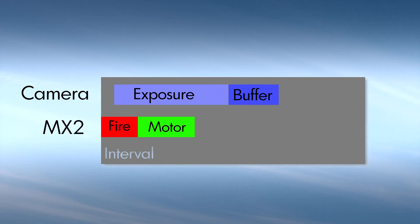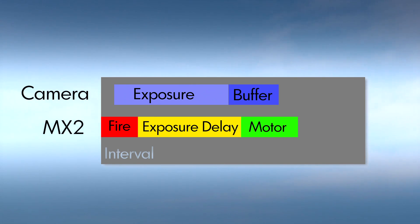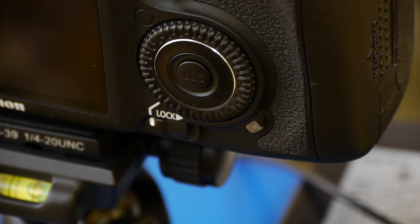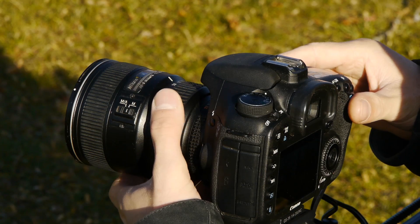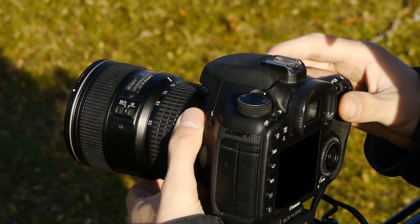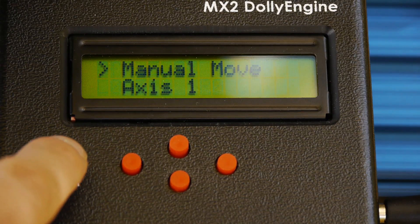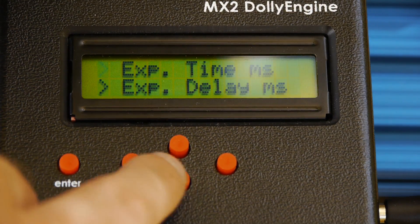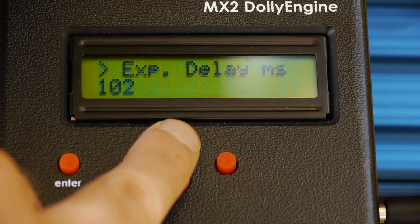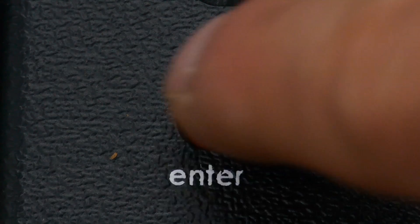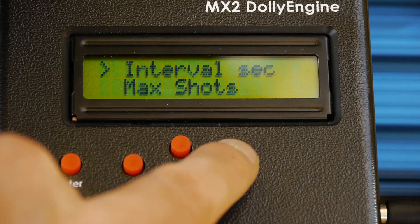You don't want the motor to move during the exposure, and you need time for the image buffer to clear before the next exposure. So the next step is to set the exposure delay. One way to find the right setting is to take a shot and count how long it takes for the exposure to complete and the buffer to clear — your exposure delay should be a little longer than that. For me this was just under one second, so I'll set exposure delay to 1000 milliseconds. Press enter, scroll to Camera, press enter, scroll to Exposure Delay — it's at 100 — hold the up button until it reaches 1000, press enter to save, and press right three times to return to the home screen.